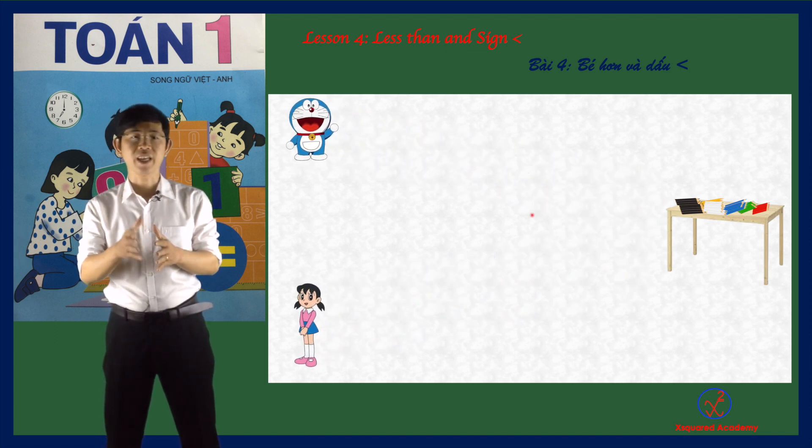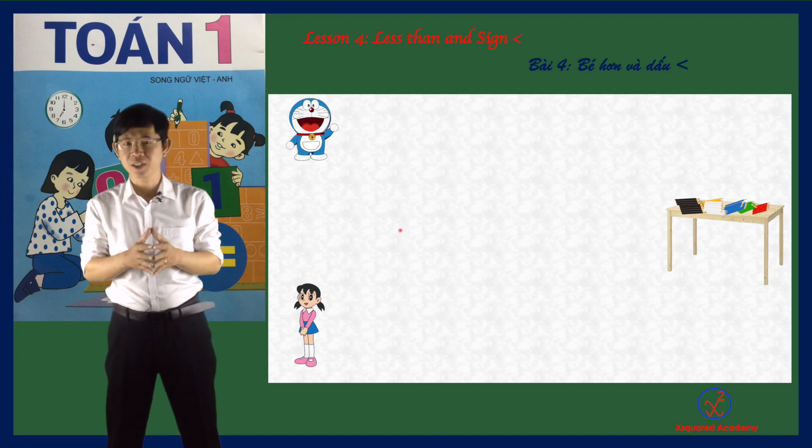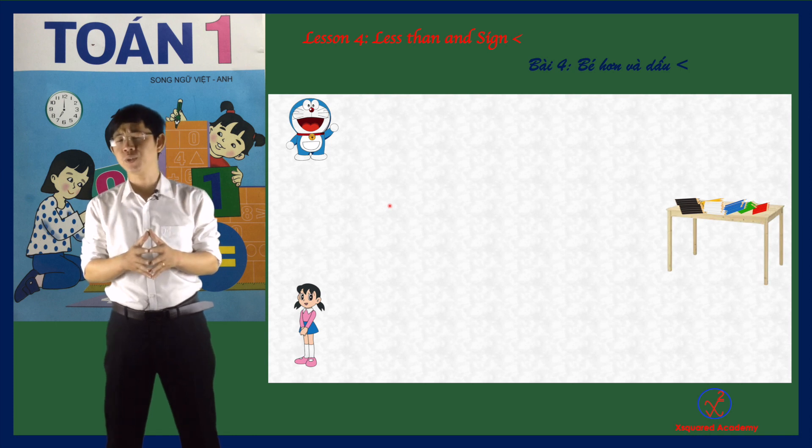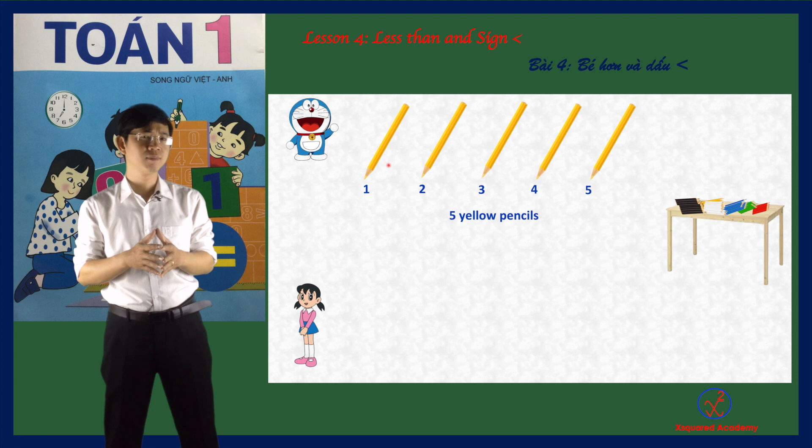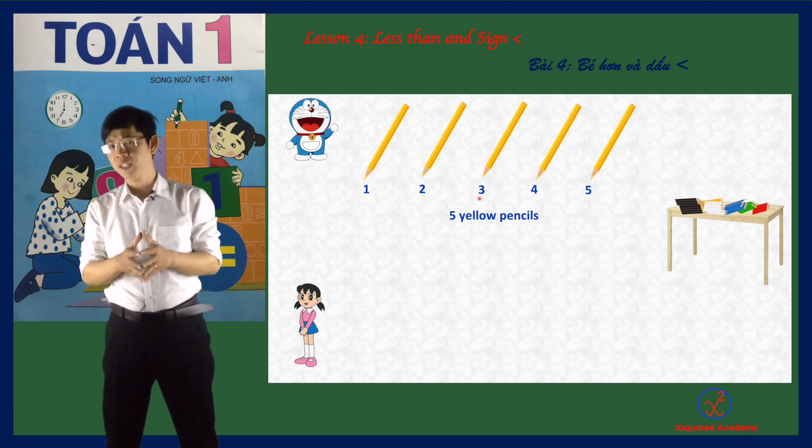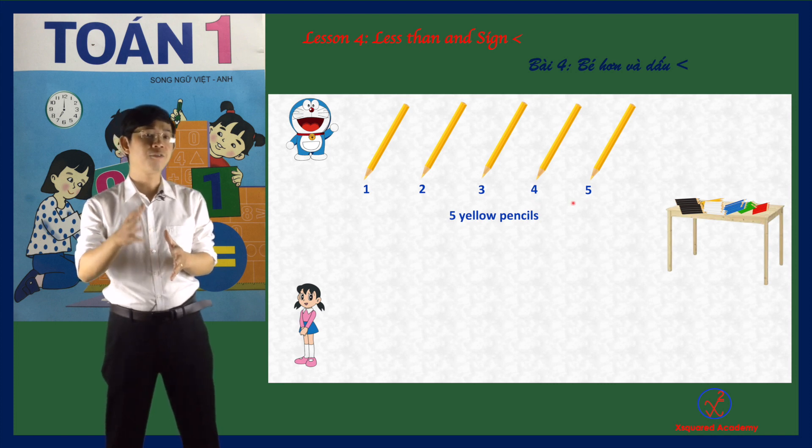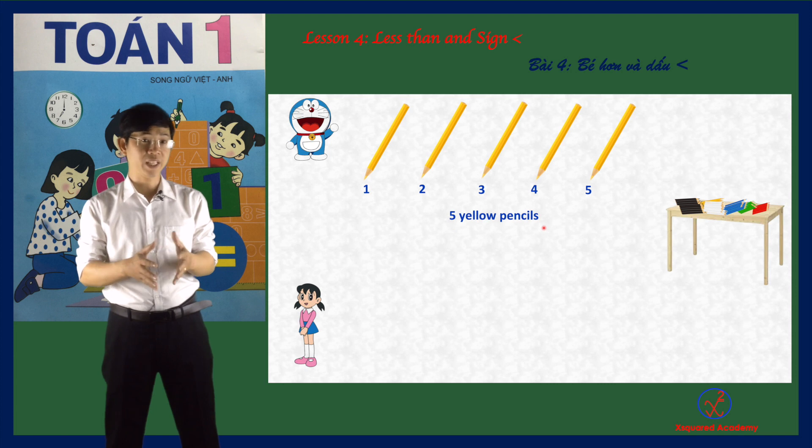Okay, you are first Doraemon. How many color pencils do you have? Show me. One, two, three, four, five, five yellow pencils. Great.